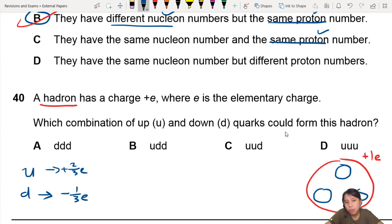So, the only possible combo you can have here to get 1E is to have up-up-down configuration. That way, you will have 2 over 3, plus 2 over 3, minus 1 over 3. All these are E. So, that will give you plus 1E.